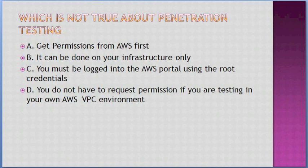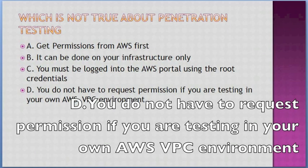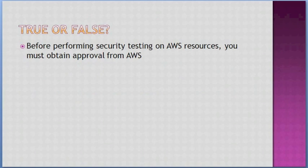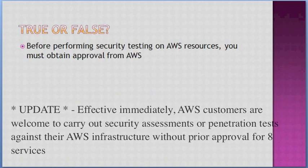Which is not true about penetration testing? Options: A. Get permissions from AWS first, B. It can be done on your infrastructure only, C. You must be logged into the AWS portal using root credentials, D. You don't have to request permission if you are testing in your own AWS VPC environment. Answer: D. True or false — before performing security testing on AWS resources you should obtain approval from AWS. Answer: True.